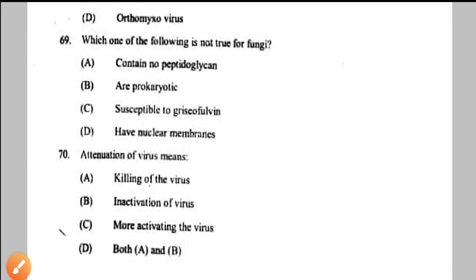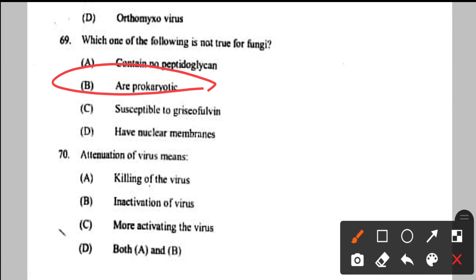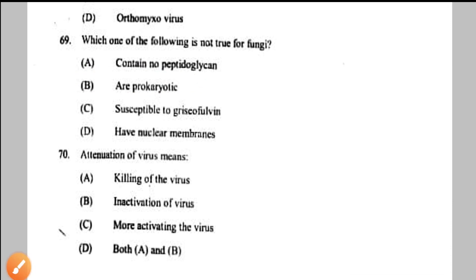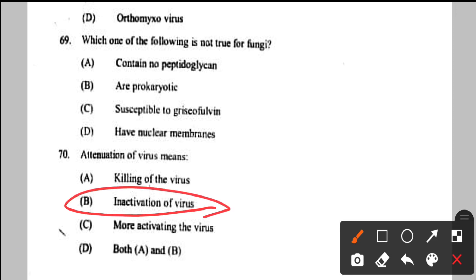Question number 69: which is NOT true for fungi? Fungi contain no peptidoglycan — that is true. That they are prokaryotic is FALSE — fungi are eukaryotic — so option B is the answer. They are susceptible to griseofulvin and do have nuclear membranes — both true. Question number 70: attenuation of virus means — weakening the disease-causing virus in the laboratory so it cannot cause disease but can help develop antibodies. Option B is correct — it is weakening of the virus, not killing it.